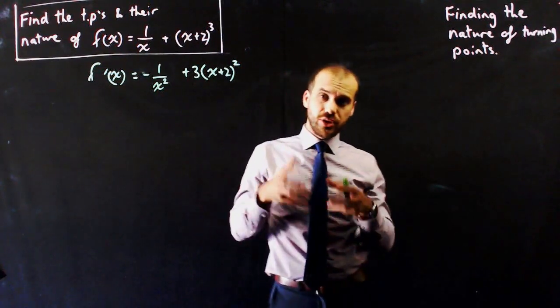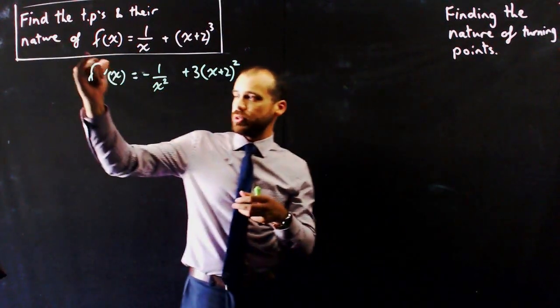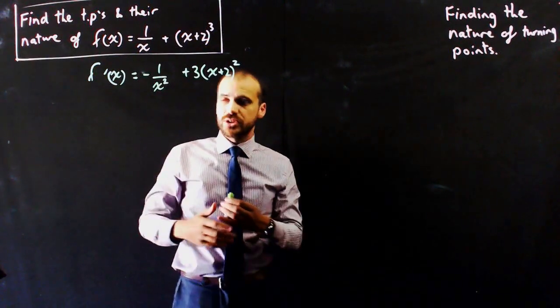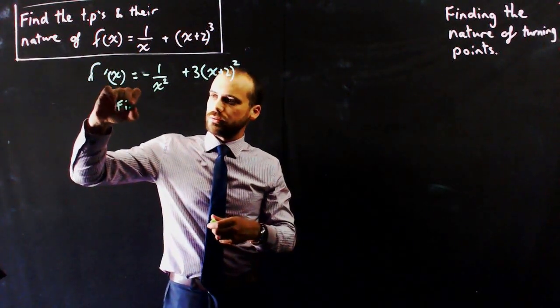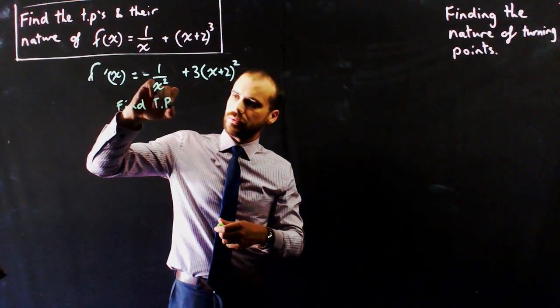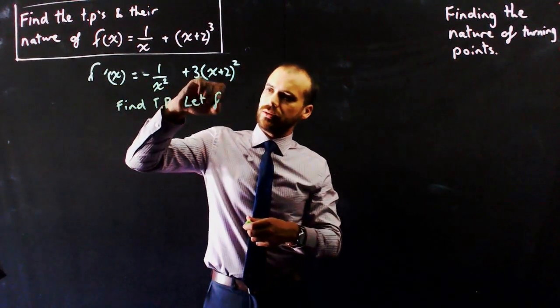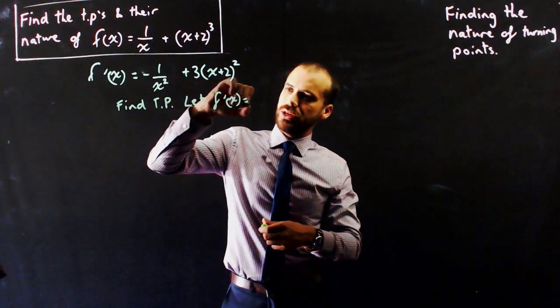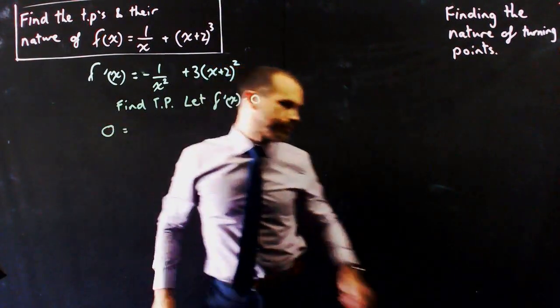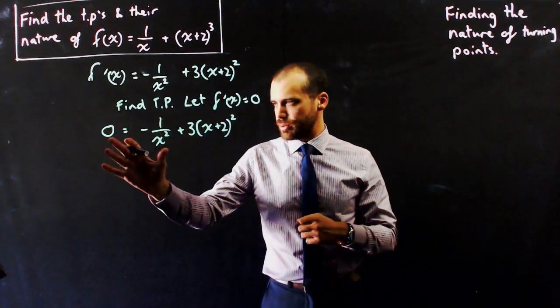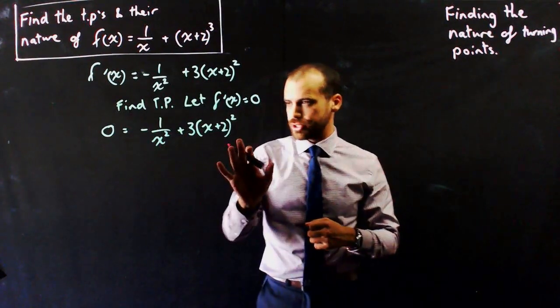Now to find turning points, remember that the derivative is the gradient function, so to find a turning point, you let the derivative function equal 0. So that's what we get, 0 equals that equation.